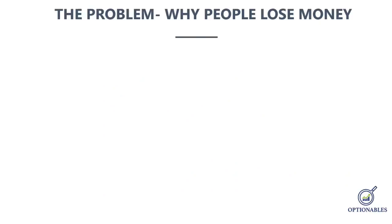Once the strategy is built properly, you know you have a profitable strategy at hand. The first reason people lose is there is no consistency in strategy. People are so fickle-minded — they don't stick to one particular strategy. Let's say they follow a 20-50 moving average crossover. Three days it works, fourth and fifth day it doesn't, and they conclude it's useless and move to a different strategy.